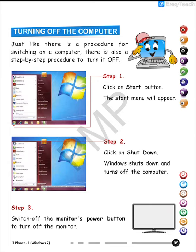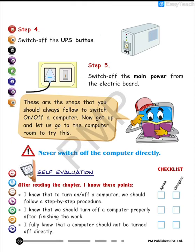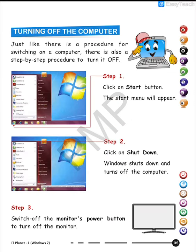Then click on the Shutdown button. So click on Start and then click on Shutdown — this is how you will be able to turn off the computer. Once you click the Shutdown button, the computer will shut down and a black screen will appear. But hold on — your computer is not yet off. After the black screen appears, you have to switch off the monitor's power.